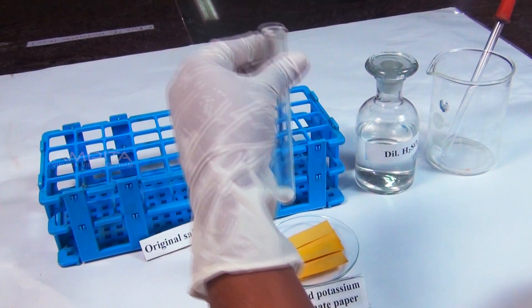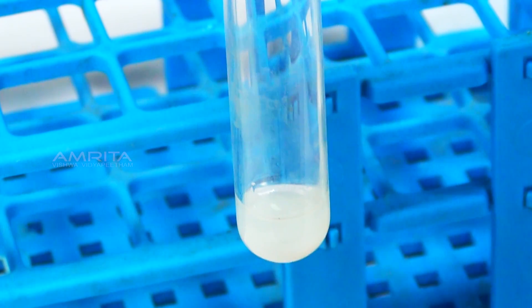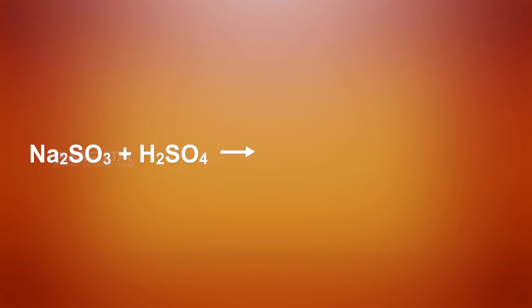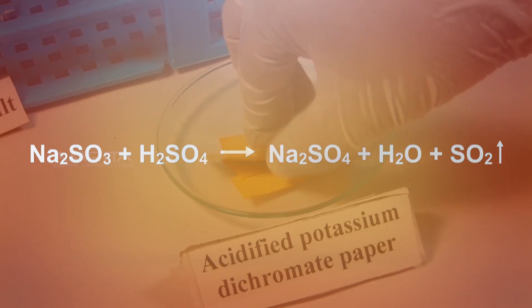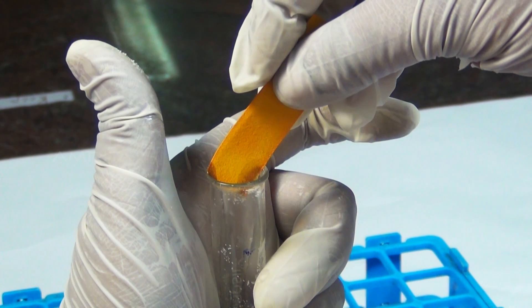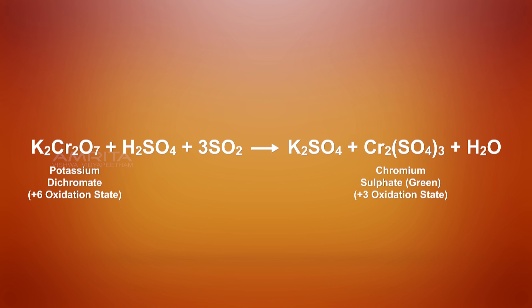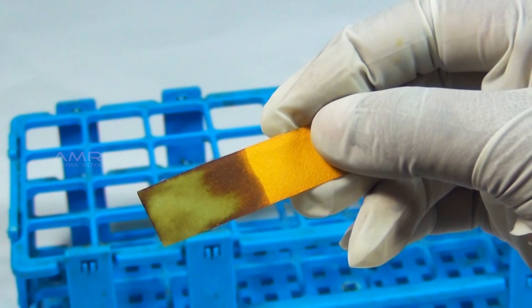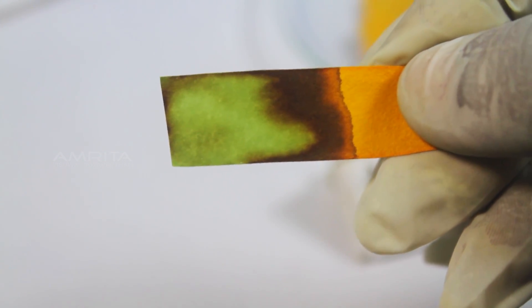Procedure: Take a small quantity of salt in the test tube. To this, add a small quantity of dilute sulphuric acid using the dropper. Sulphite reacts with dilute sulphuric acid to form colourless sulphur dioxide gas with pungent smell. Place an acidified potassium dichromate paper over the mouth of the test tube. In the presence of acid, sulphur dioxide reduces chromium in potassium dichromate from +6 to +3 oxidation state. Chromium in the +3 oxidation state gives green colour to the acidified potassium dichromate paper.